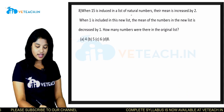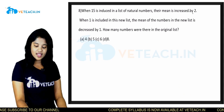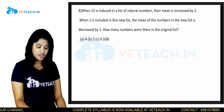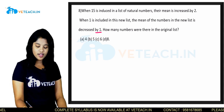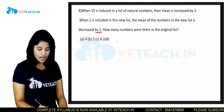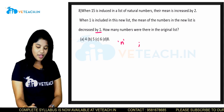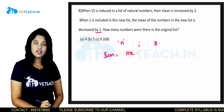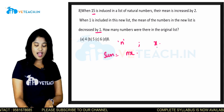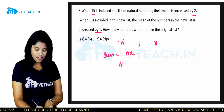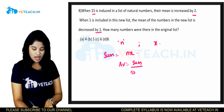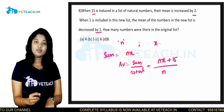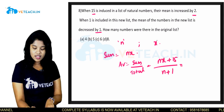When 15 is included in a list of natural numbers, the mean is increased by 2. When 1 is included in this new list, the mean of the numbers in the new list is decreased by 1. How many numbers were there in the original list? Let the total number of numbers be n and the average be x, so the sum of the numbers is nx. When 15 is included, total becomes n + 1 and average becomes x + 2.